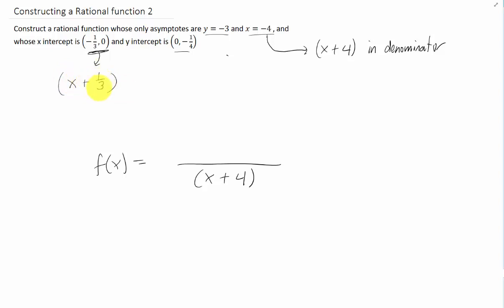Now typically we have a tendency to write that in a different form. We're allowed to multiply any of these factors by whatever numbers we want. And if we want to get rid of our fraction we can multiply this factor by 3. And that would give us a factor of 3x plus 1. You'll notice that if we put a 3x plus 1 in our numerator it's still the case that if we plug in x equals negative 1 third for x we get 0 in the numerator and therefore 0 for the whole function.